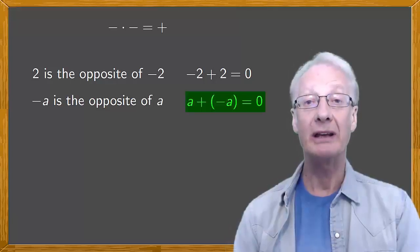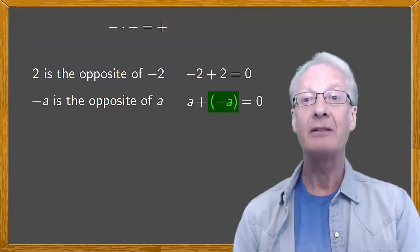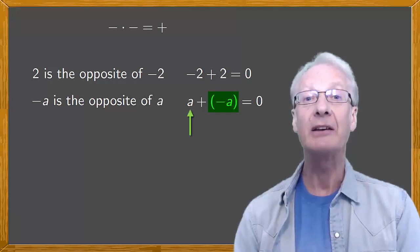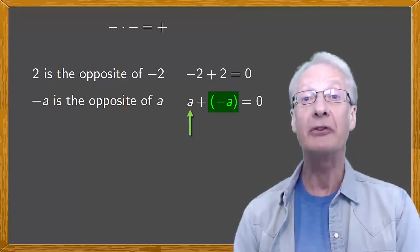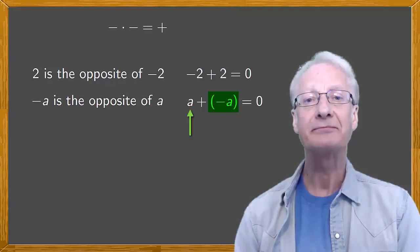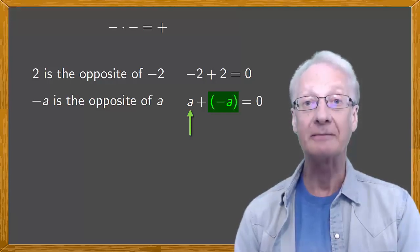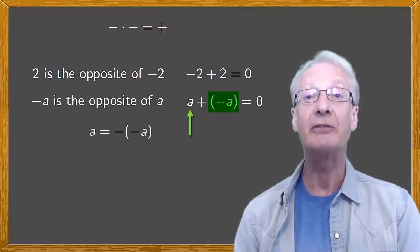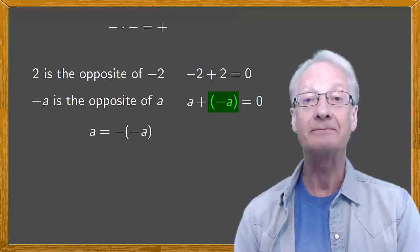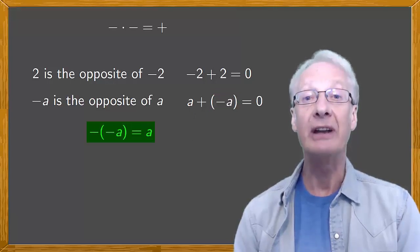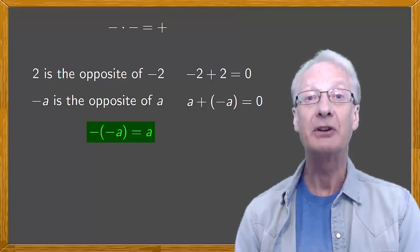To put that another way, if we consider negative a, then there's also the number a, such that when we add the two together, the result is 0. What does that mean? From the point of view of negative a, a is its opposite, so that a is the negative of negative a. Or turning that equality around, the negative of negative a equals a. This is true for any number a.